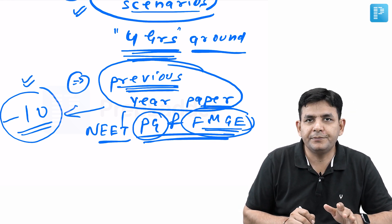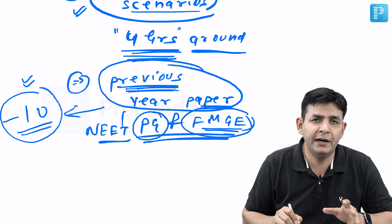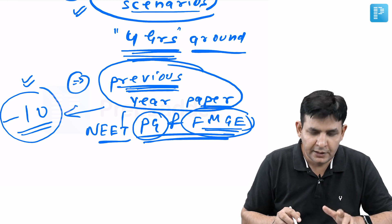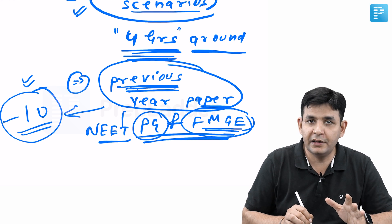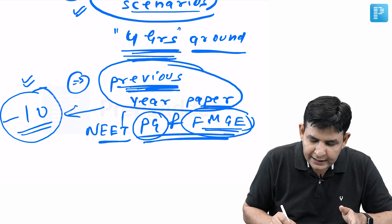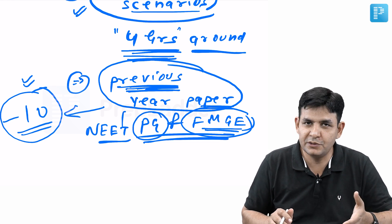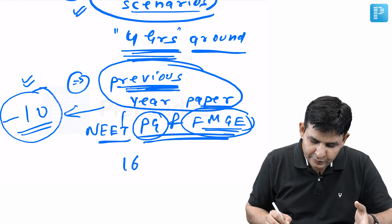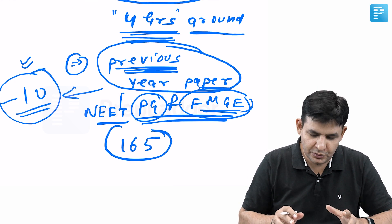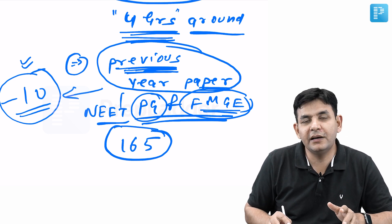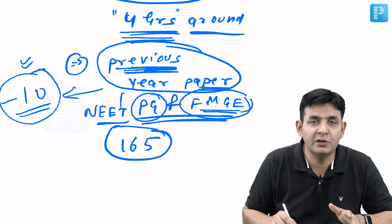The same thing happened to one FMG student who had failed four to five times and after that passed. The best improvement that particular student made was doing all the previous papers of PG and FMG. That fellow even did the NEET papers also and got 165 marks in the final session. I take it in this particular fashion for you too - you should not miss out on previous year papers.